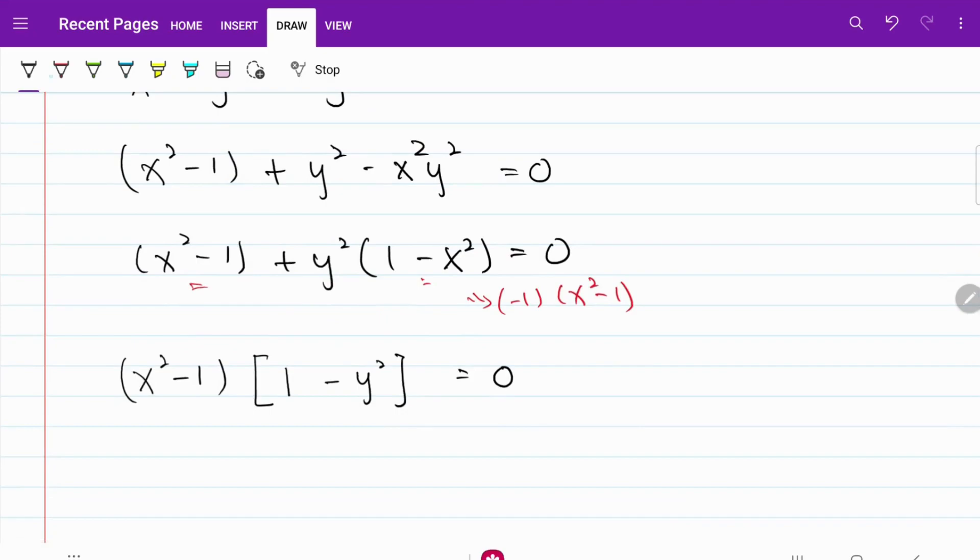And if you look at x squared minus 1 and 1 minus y squared, they are both difference of two squares. So let me go ahead and expand this out. I now have x plus 1, x minus 1, 1 plus y, 1 minus y is equal to 0.